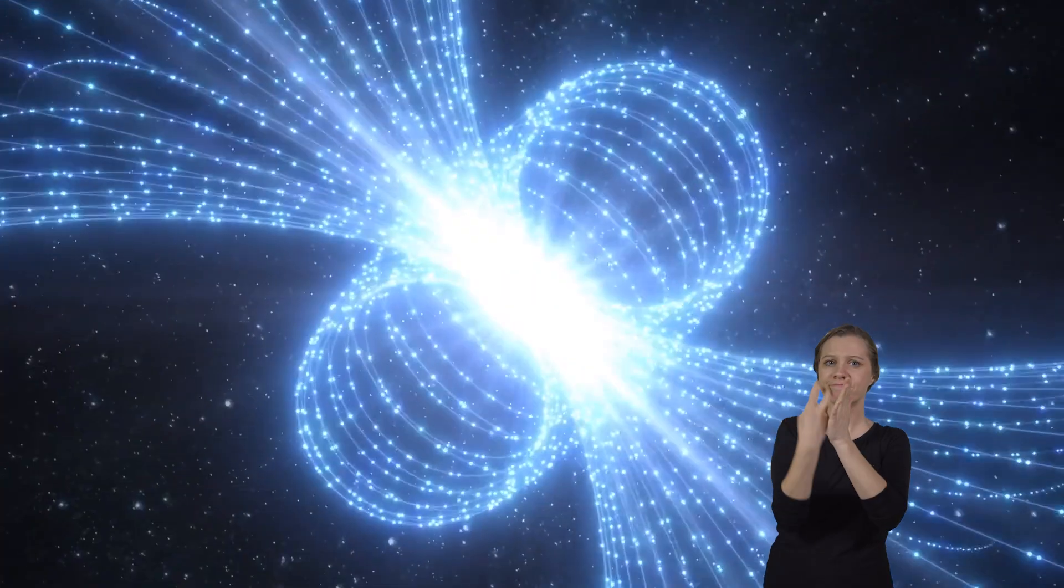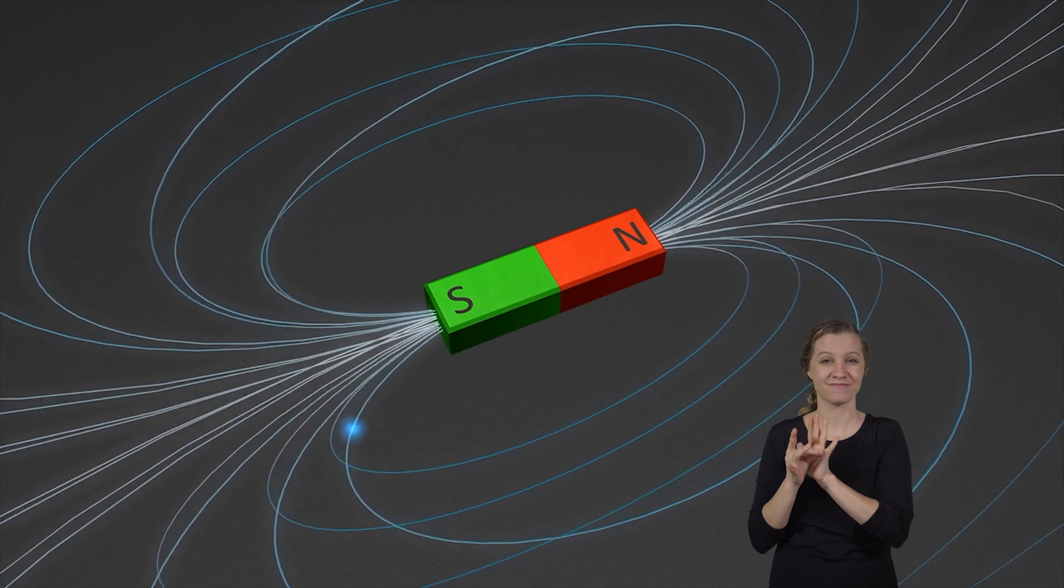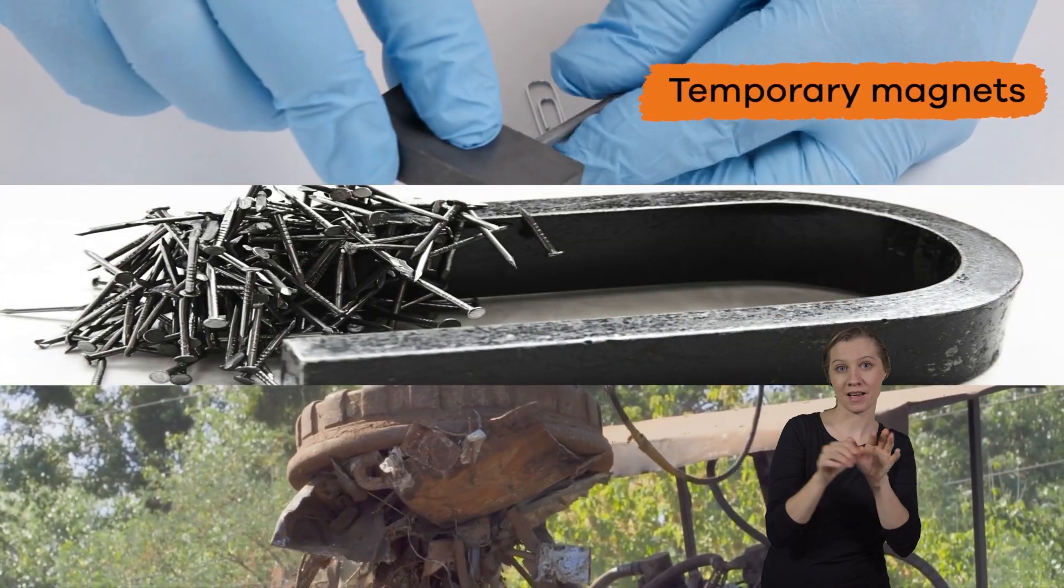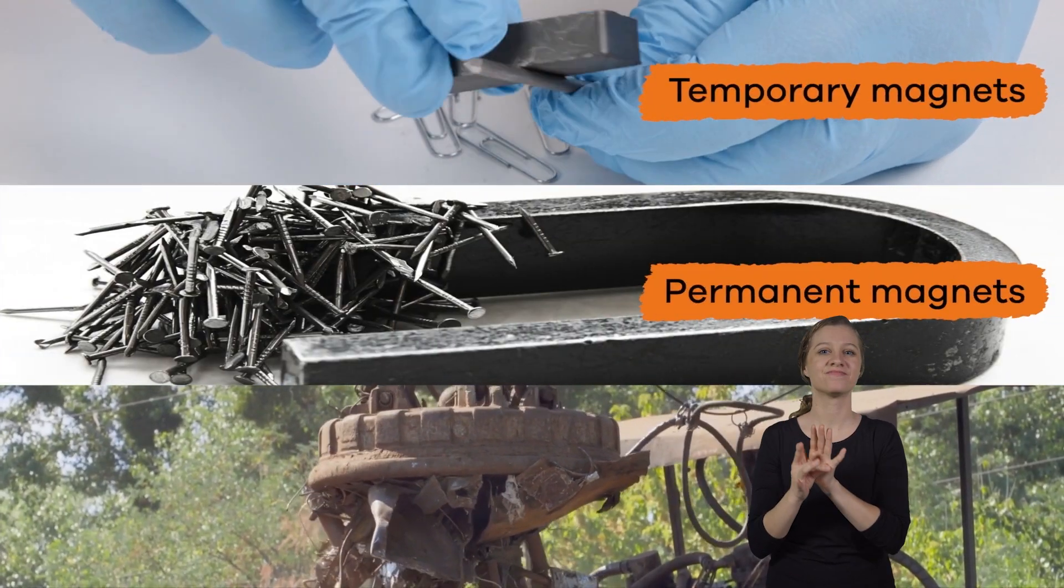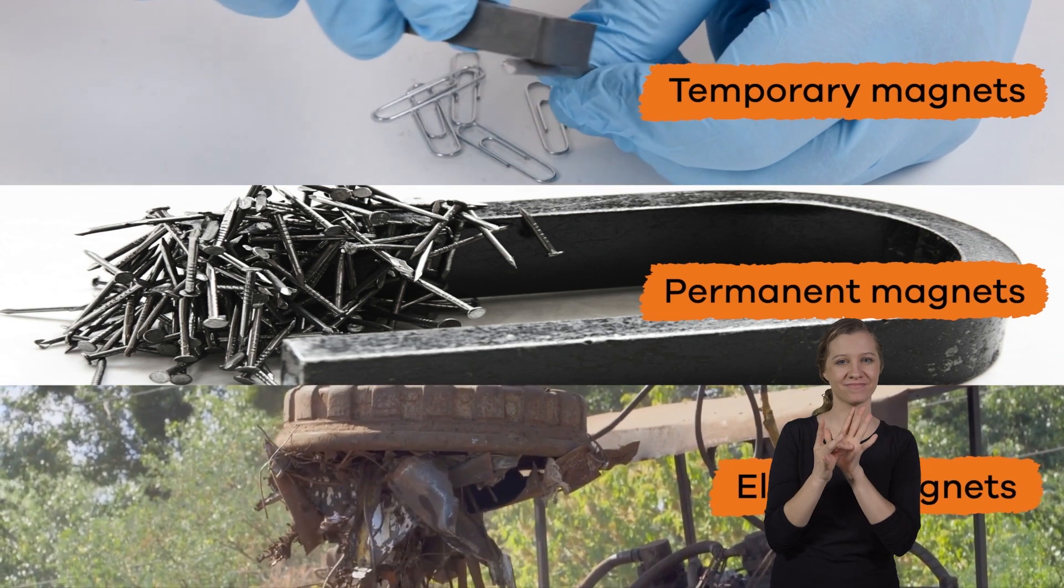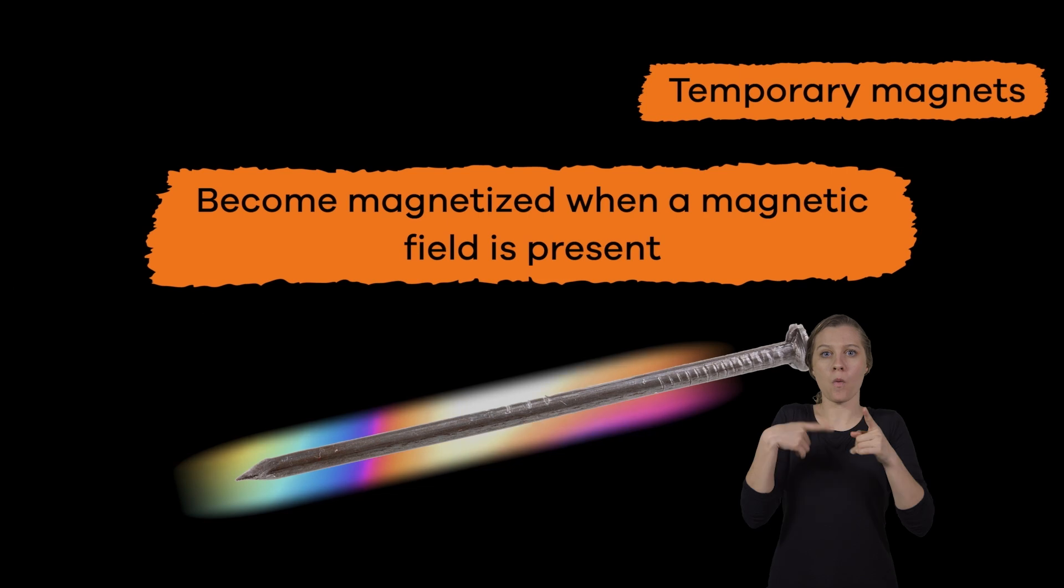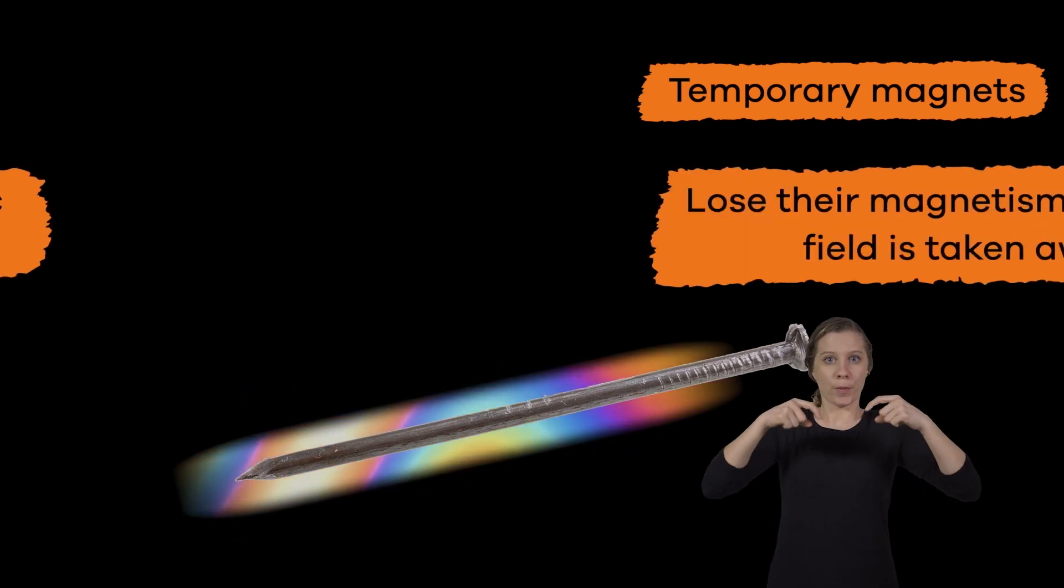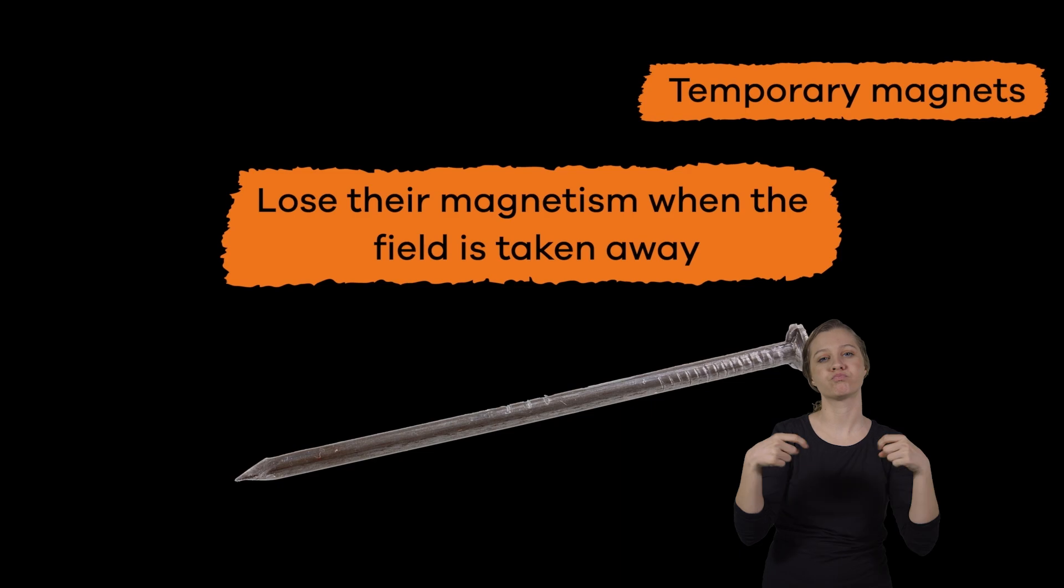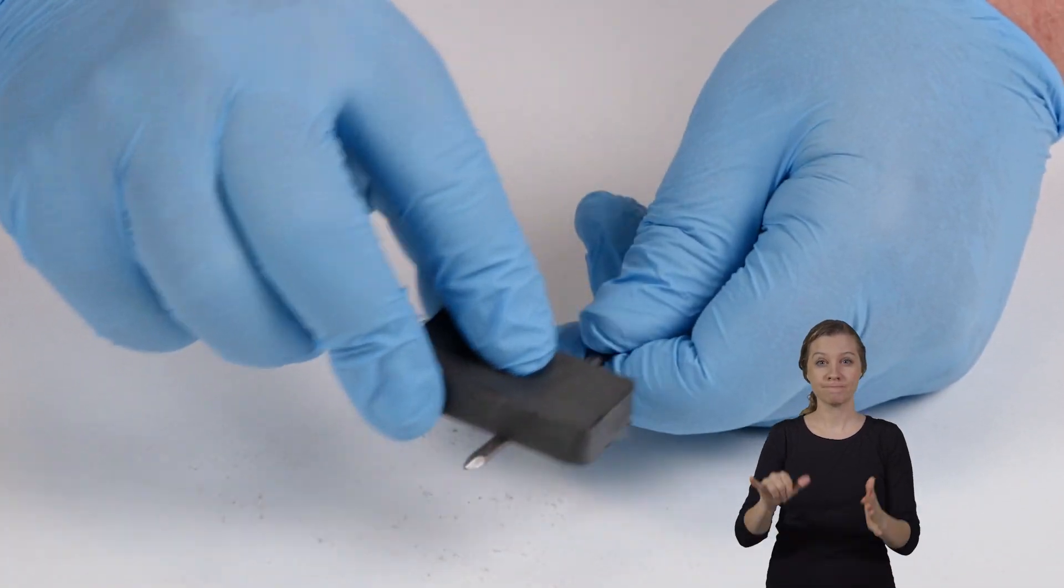Now that we have recapped the fundamentals, let's dive into the different types of magnets: temporary magnets, permanent magnets, and electromagnets. Temporary magnets become magnetized when a magnetic field is present and lose their magnetism when the field is taken away, like when you rub a magnet against another piece of metal like a paper clip or a nail.